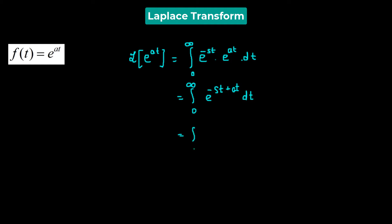So we have the integral from 0 to infinity of e raised to the power of — taking t as the common factor — negative s minus a, times dt.